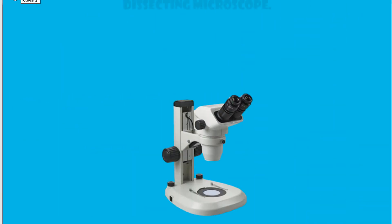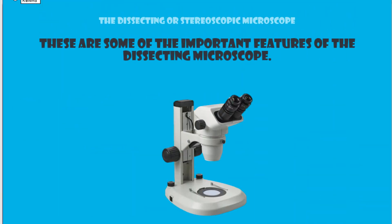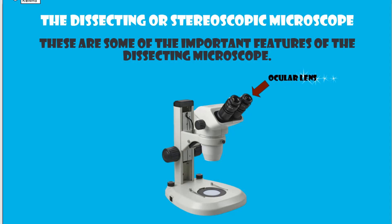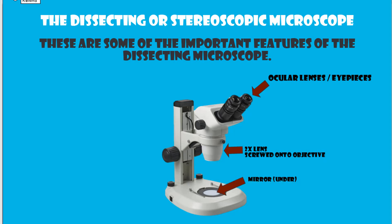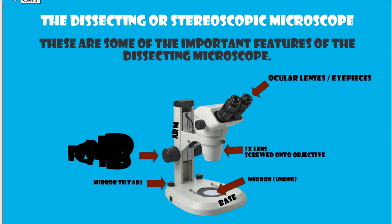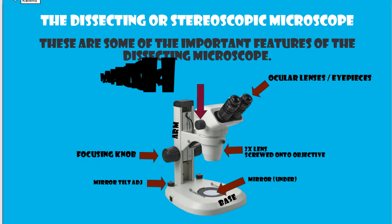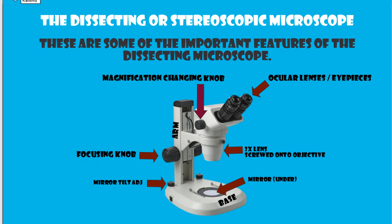These are some of the important features of the dissecting microscope: the ocular lenses or eyepieces, the 2x lens screwed on to the objective, the mirror, the base, the arm, the mirror tilt adjustment knob, the focusing knob, and the magnification changing knob.